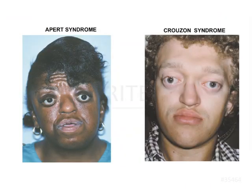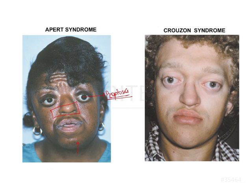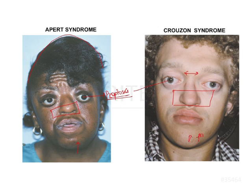Looking at Apert syndrome, there is midfacial hypoplasia, a prominent prognathic mandible, proptosis, and a tower-shaped skull. In Crouzon syndrome, similar features are seen — hypotelorism, proptosis — along with midfacial hypoplasia giving a prognathic appearance to the mandible. These features are characteristic of the craniosynostosis syndromes and differ from what is seen in the given clinical picture.